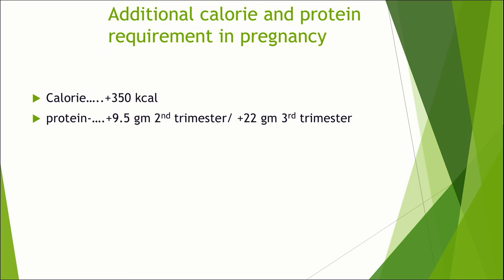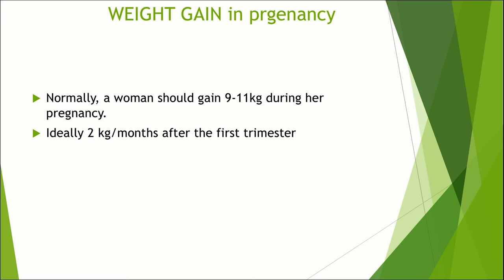What is the additional calorie and protein requirement in pregnancy? The additional calorie requirement during pregnancy is 350 kilocalories per day. The additional protein requirement is 9.5 grams during the second trimester and 22 grams during the third trimester. Normally, a woman should gain up to 9 to 11 kilograms during their pregnancy. Ideally, the weight gain will be 2 kg at the first trimester, and then the rate of weight gain increases as gestational age increases.